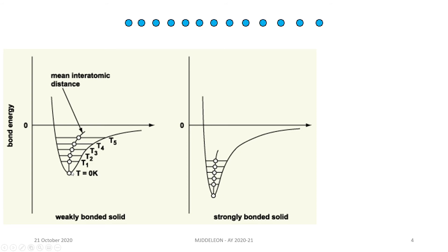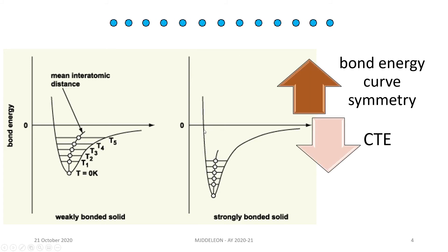And if we increase the temperature, we'll see that for the weakly bonded solid, there's a larger change in the interatomic distance than that of the strongly bonded solid. So from here, we can see that increasing the bond energy could increase the curve symmetry, which would then decrease the coefficient of thermal expansion of our system.